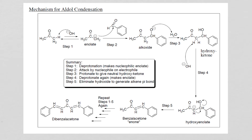After our hydroxide deprotonates that alpha hydrogen from our acetone, we end up with what we call an enolate group. This is a strong nucleophile, actually looking to share that negative charge, which it does in step two when it finds a benzaldehyde. The enolate attacks right here and the negative charge gets displaced to the negative end of that benzaldehyde for stabilization purposes. We have here the negative charge and it's known as an alkoxide.